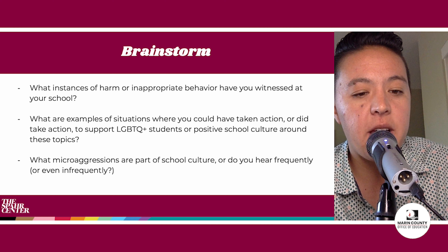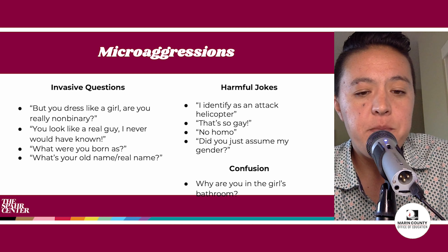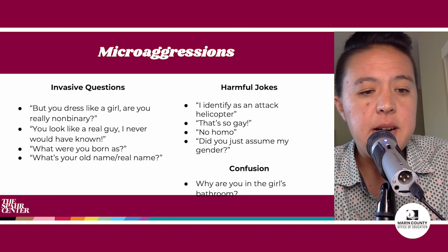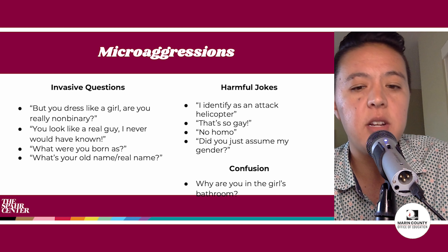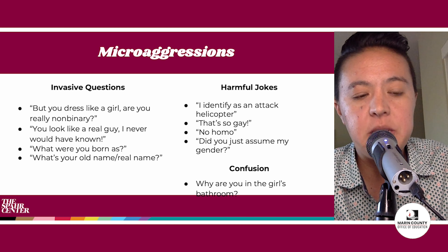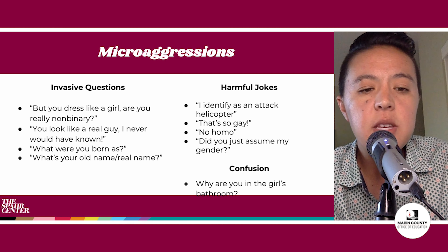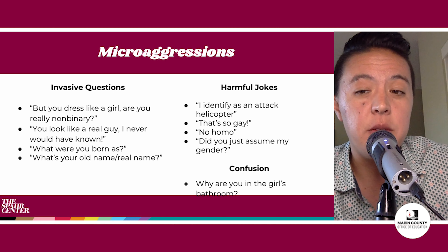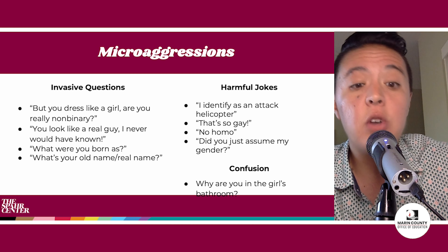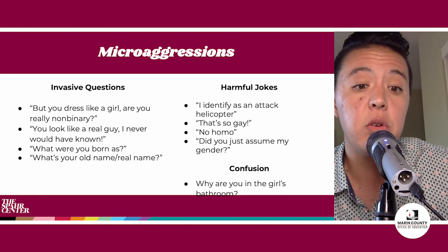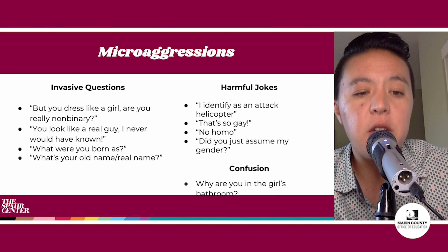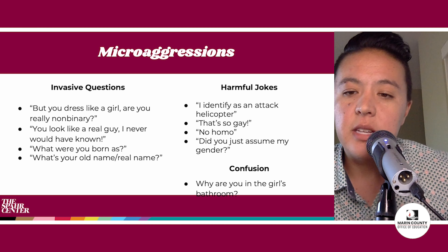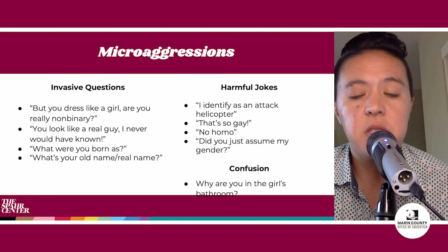Speaking of microaggressions, the next slide shows some microaggressions we've actually heard in middle school or high school communities. They can usually be categorized as an invasive question, a harmful joke, or misguided or potentially harmful confusion. These are examples of things you might hear in your class or even when students are passing by in the halls in those non-classroom moments. These always need to be addressed. Depending on the situation, you can use one of the five D's we just learned about. It's incredibly important to do something rather than nothing — instead of just standing by as a witness, we need to prioritize the safety and well-being of LGBTQ+ students in the moment.